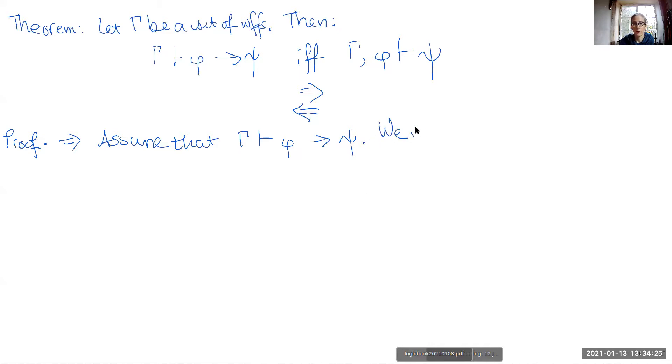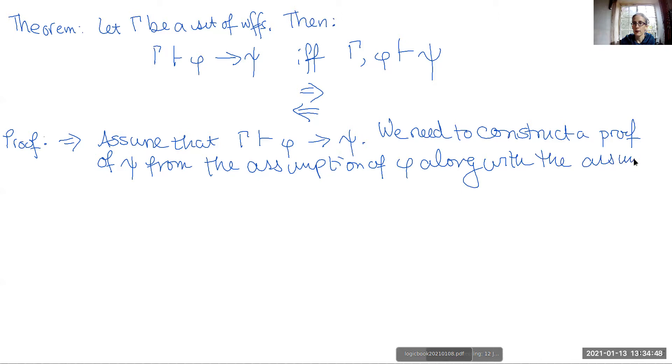Now what we need is to construct a new proof that has gamma as its assumptions, phi as its assumptions, and then has at some point later down in the proof psi alone on a line. We need to construct a proof of psi from the assumption of phi along with the assumption of all the WFFs in gamma.